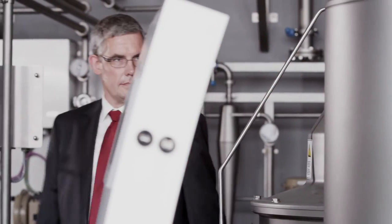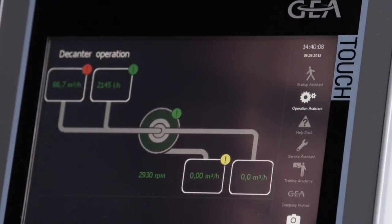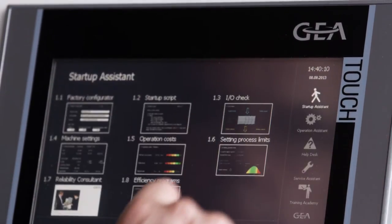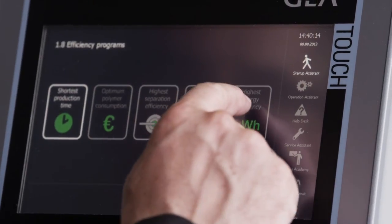I.O. makes machine operation easier and much more efficient. But users can go even further. With our optional efficiency assistance our machines optimize themselves. One touch only. It has never been that convenient to run your centrifuge with minimum costs, maximum performance, or best separation results.